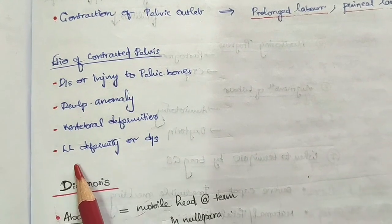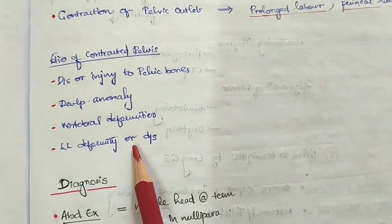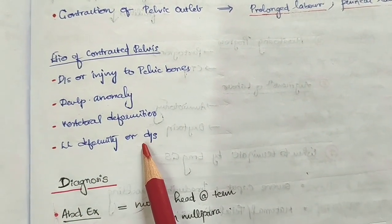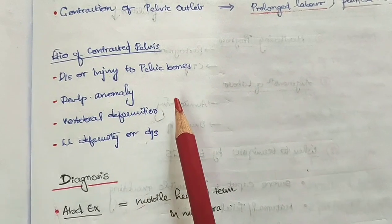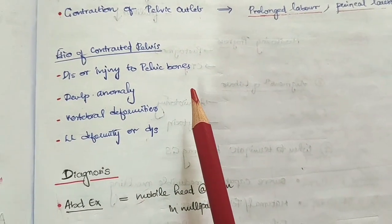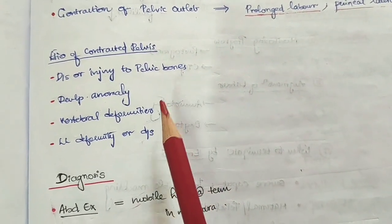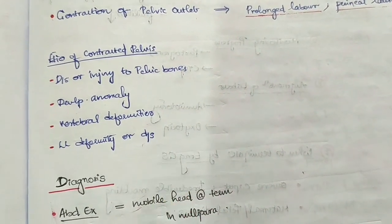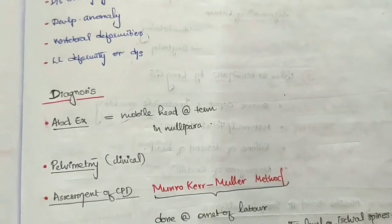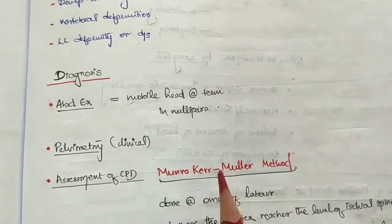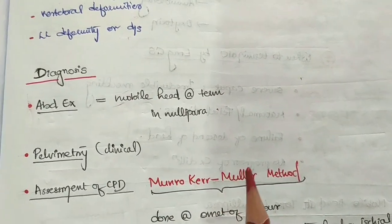Other causes include lower limb deformity or lower limb diseases. Diagnosis: how do we diagnose a contracted pelvis?